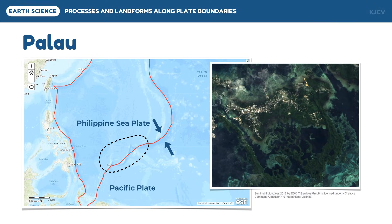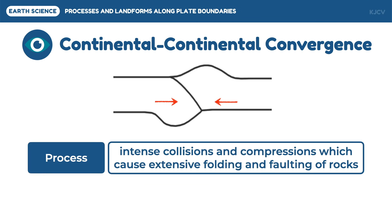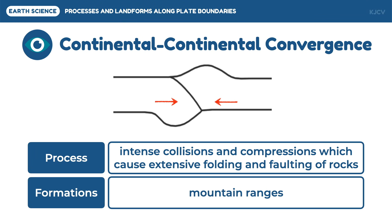The next type of convergent plate boundary is between two continental crusts. In this plate boundary, the two thick continental plates collide and both have a density much lower than the mantle, which prevents subduction. Fragments of crust or continent margin sediments might be caught in the collision zone. The intense compression can also cause extensive folding and faulting of rocks within the two colliding plates. This deformation can extend hundreds of miles into the plate interior.